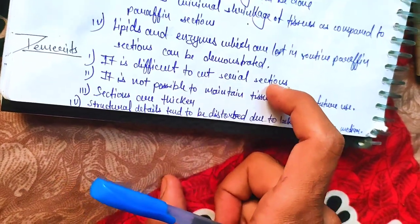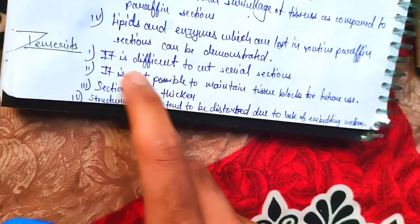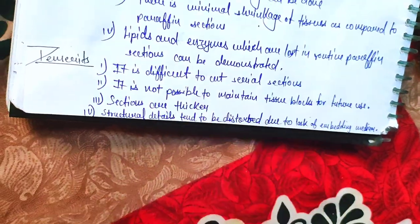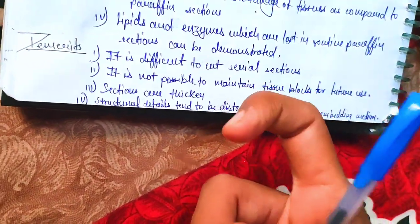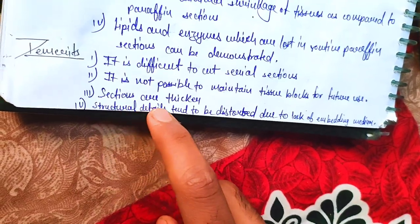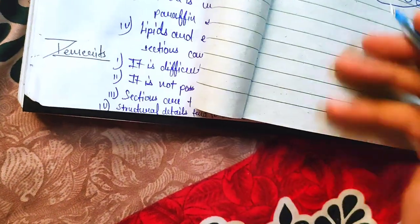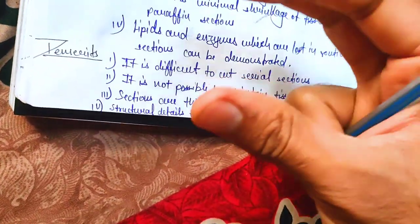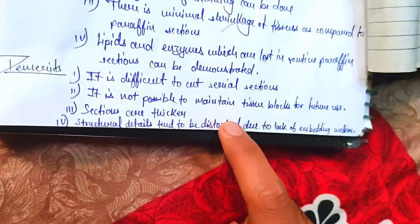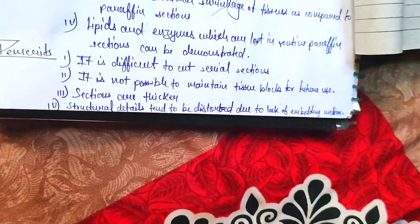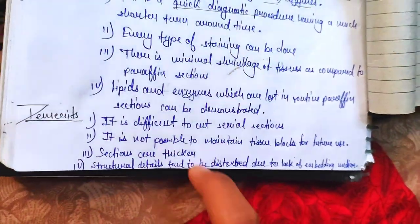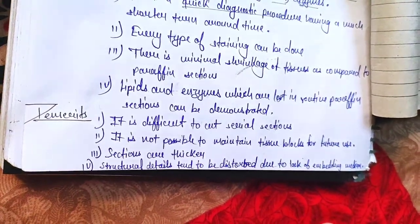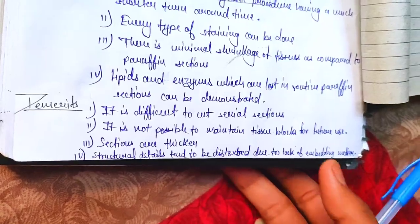The demerits are: it is difficult to cut serial sections; it is not possible to maintain tissue blocks for future use; the sections can be thicker than ideal; and structural details tend to be lost. This is an older method, and nowadays it is largely replaced by the cryo-state.